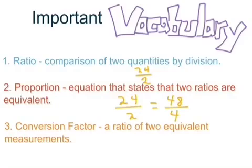And finally, a conversion factor - a ratio of two equivalent measurements. So if we use our examples that we have over here, what is the conversion factor here? Well, the conversion factor is that if we really simplify these both down, this one and this one, that there are 12 inches in a foot.